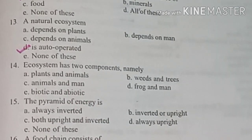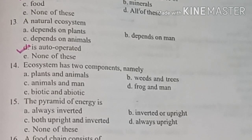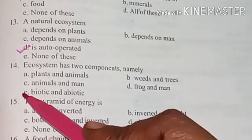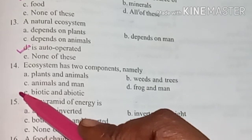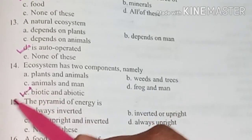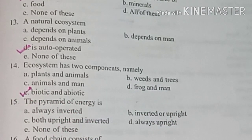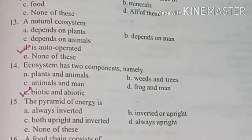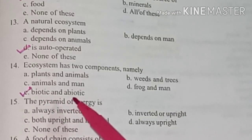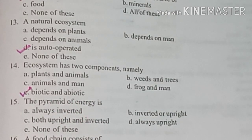Ecosystem has two components, namely answer option A: Biotic and abiotic.